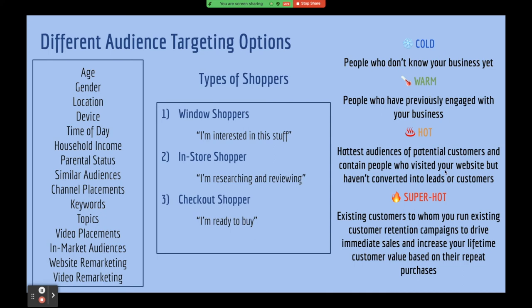I like to think about audiences as cold, warm, hot, and super hot. Cold is people that don't know your business. Warm is people who previously engaged — they went to your Facebook page or website or called you. Hot is people who definitely visited your website or became a lead — they gave you their information and you've had a conversation. Super hot is an existing customer, like someone with a Network After Work membership looking to renew or attend an exclusive event.